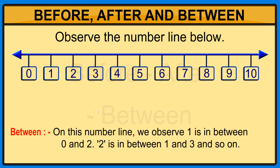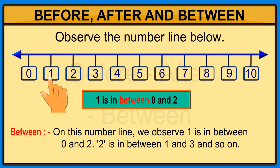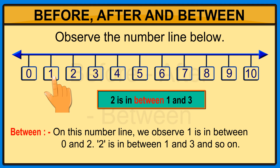On this number line we observe one is in between zero and two, two is in between one and three, and so on.